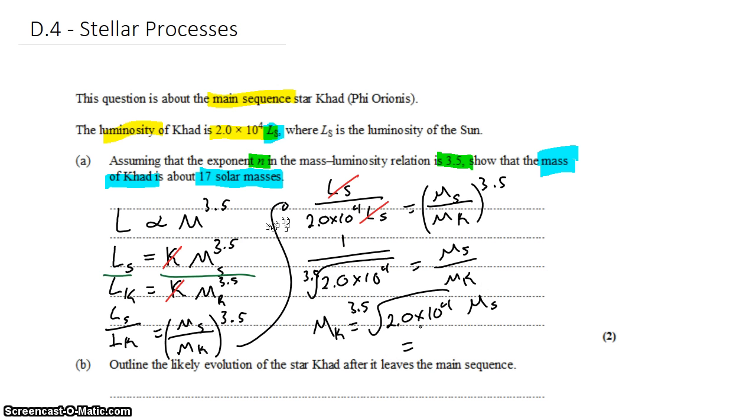So you'll have to punch that into your calculator. You'll have to learn how to do these kinds of arbitrary roots on your calculator. But when you do that, you should get 16.9 times the mass of the sun.